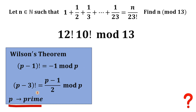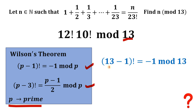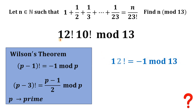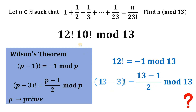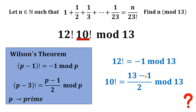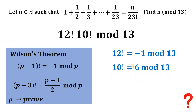Also, for a prime P, (P − 3)! is congruent to (P − 1)/2, mod P. Since 13 is prime, Wilson's theorem gives 12! ≡ −1 mod 13. Using the second result, (13 − 3)! = 10! ≡ (13 − 1)/2 = 6 mod 13.